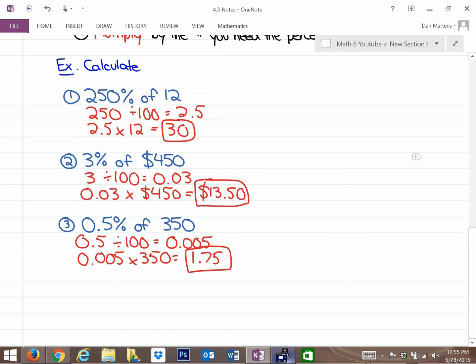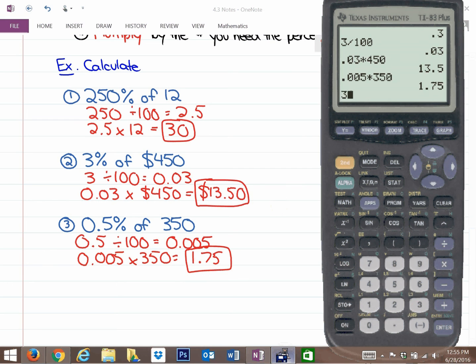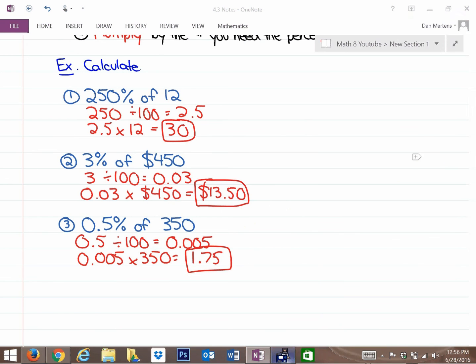And that makes sense, because if I wanted to find out 1% of 350 using the mental math method, I could divide it by 100. So if I divide that by 100, that right there on my calculator is 1% of 350. So if I wanted to find out half a percent, I could divide it by 2. And I get the exact same answer, the 1.75, whether I use a mental math type of method, or whether I use a calculator type of method.